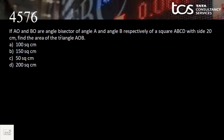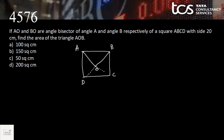Next question: AO and BO are angle bisectors of angles A and B of a square ABCD. In a square, all four sides are equal, and the diagonals are also angle bisectors. AO and BO meet at O, which is the midpoint of the diagonal. The square has side 20 cm. Find the area of triangle AOB. Since it's a square, the diagonals intersect each other at 90 degrees.